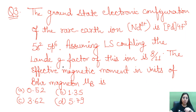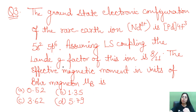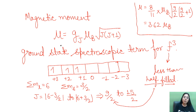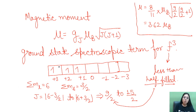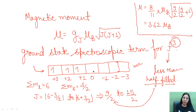The third question: the ground state electronic configuration of the rare-earth ion Nd³⁺ is [Pd] 4f³ 5s² 5p⁶. Assuming LS coupling, the Landé g-factor is 8/11. The effective magnetic moment in units of Bohr magnetons is to be found. The formula for magnetic moment is μ = g_J × μ_B × √(J(J+1)), so you first need to find the ground state J value.